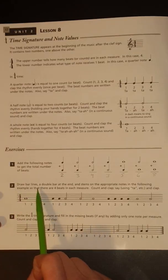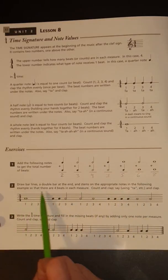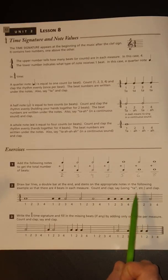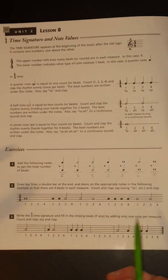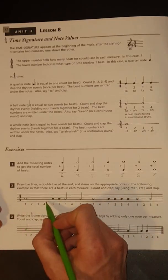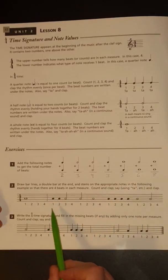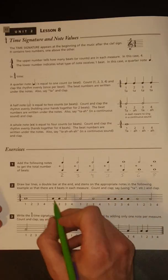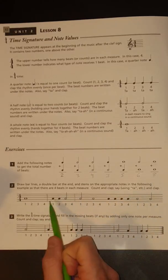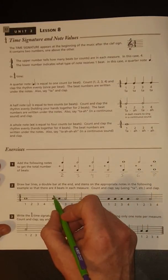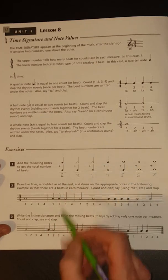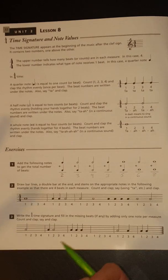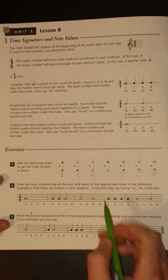Number two, draw bar lines, a double bar line at the end and stems on the appropriate notes in the following example so that there are four beats in each measure. Count and clap, say using ta and clap. Let's just do our bar lines first. That's a whole note right there so that's going to be four beats. That's going to be all you can fit in that measure and they kind of give you the numbers down here so you know there's four beats. Try bar line and if you wanted to think about, let's just do the stems at the same time so here's obviously a quarter note because there's no note that's just a filled in dot with no stem so that's going to be a quarter note stem going up since it's under the middle line.